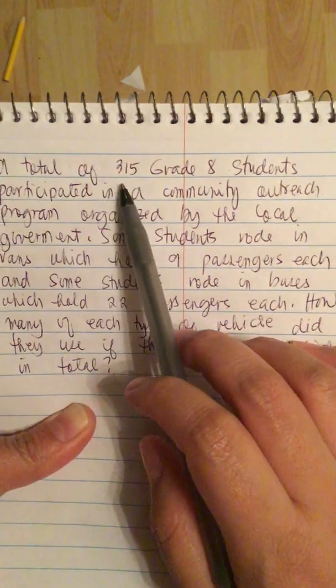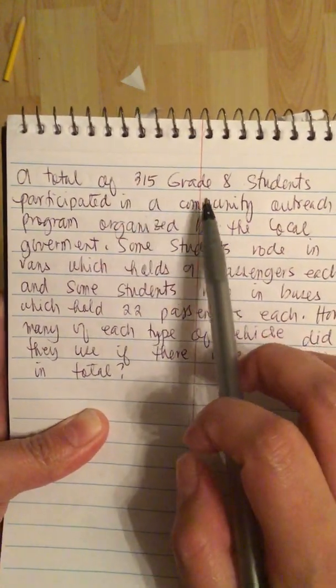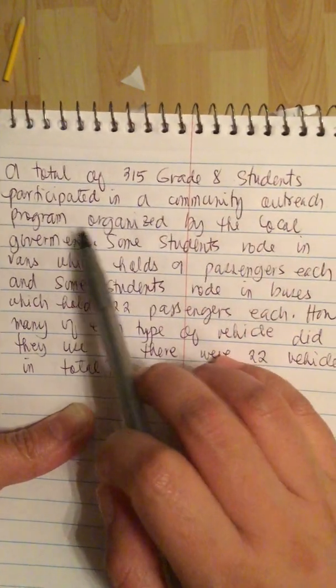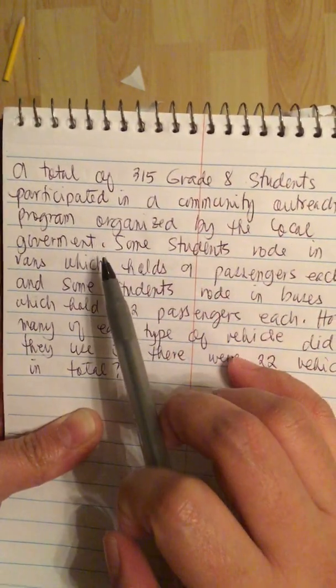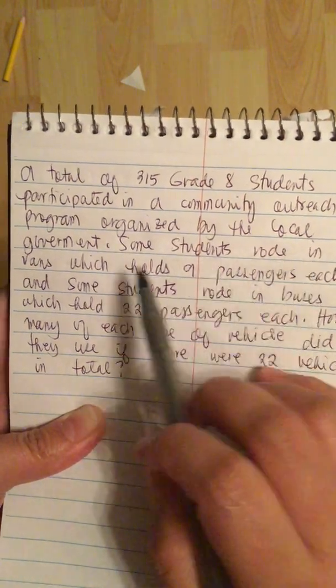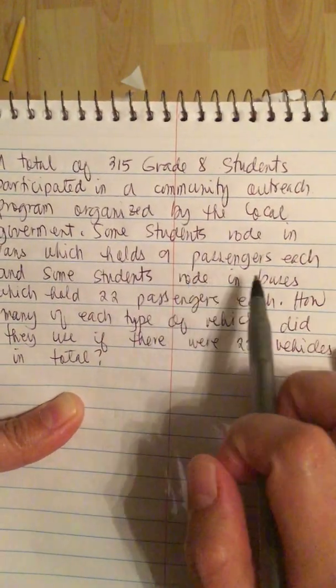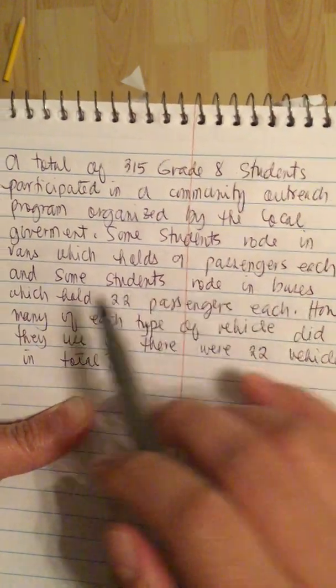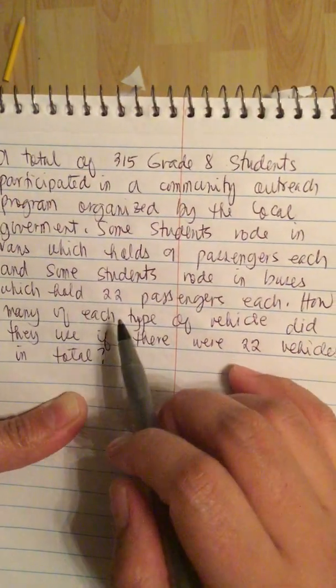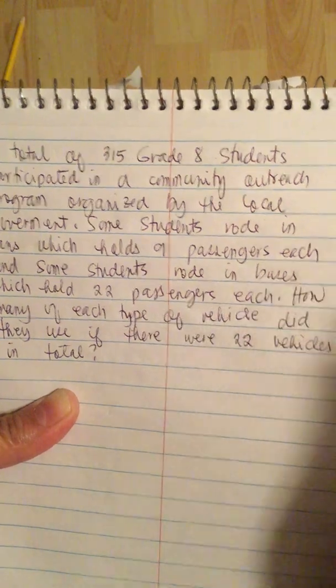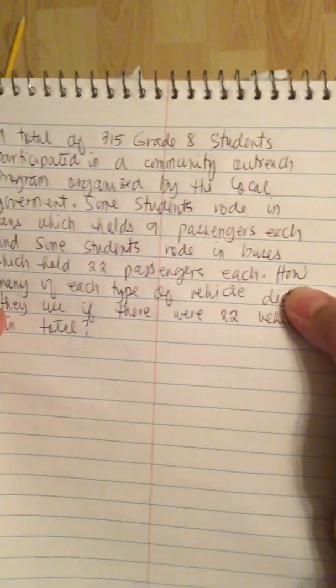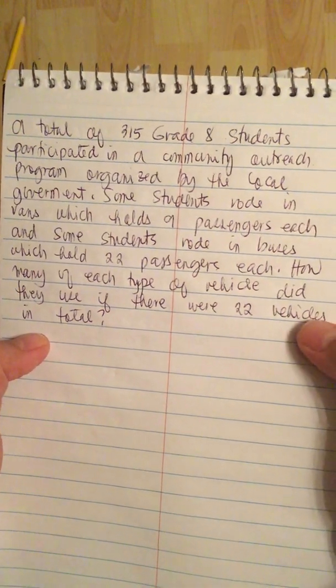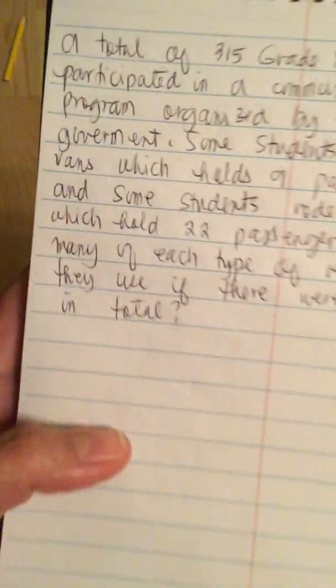A total of 315 grade 8 students participated in a community outreach program organized by the local government. Some students rode in vans, which hold 9 passengers each, and some students rode in buses, which hold 22 passengers each. How many of each type of vehicle did they use if there were 22 vehicles in total?